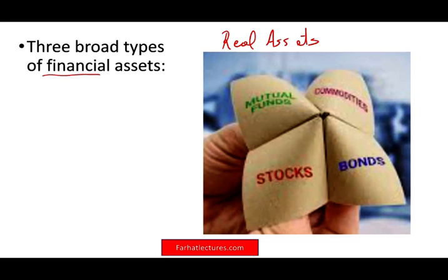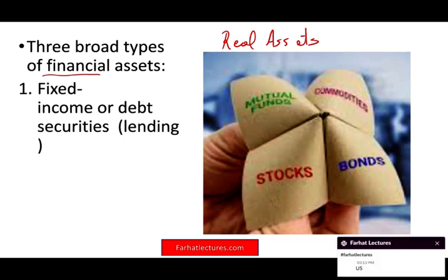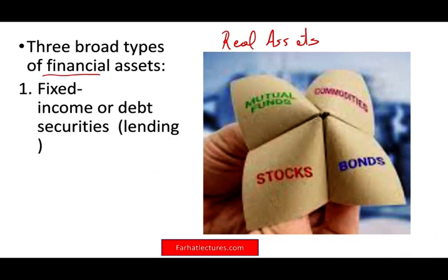What are financial assets? Financial assets can be broken down broadly into three categories. One is fixed income or debt securities. When we say fixed income or debt securities, basically you are a lender. You lend money to someone else, like you buy a bond or you buy an annuity. The second category is equity investments — we are talking about stocks, where you become an owner of the company.